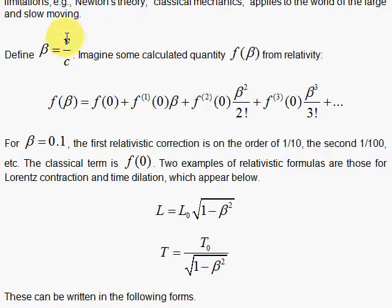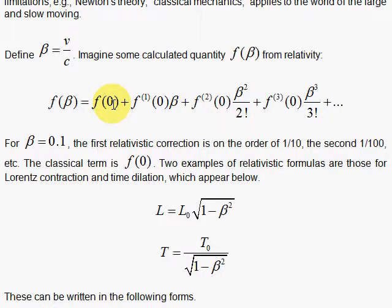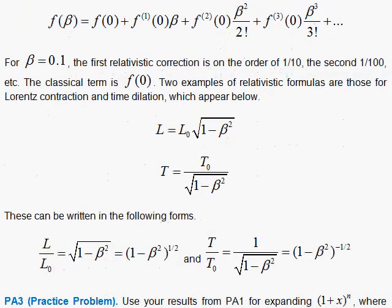Beta is dimensionless because you're dividing your speed by the speed of light, and you can do a nice Taylor series expansion with these formulas. When speeds are small, beta squared is very small — if beta is one-tenth, beta squared is one-hundredth, and beta cubed is one-thousandth. You can see the usefulness of the Taylor series: you get the Newtonian term first, then the first relativistic correction, then the second — a very nice connection between the laws of physics and their domains.